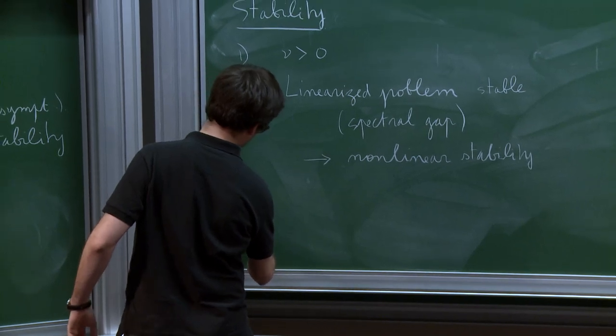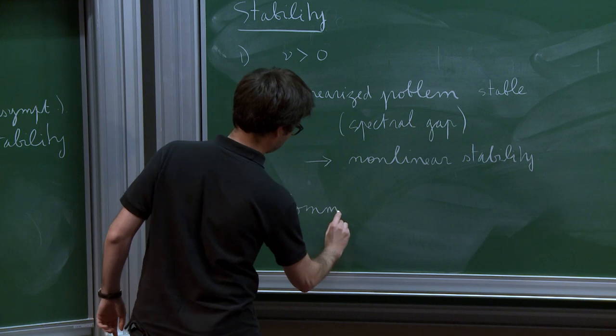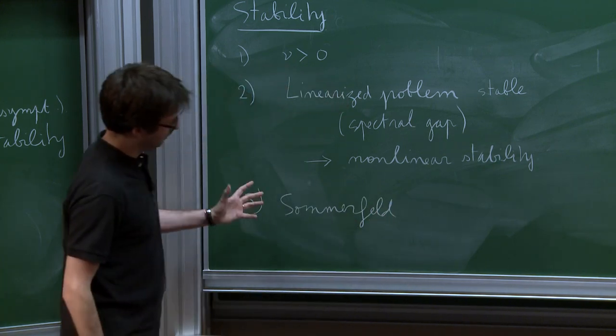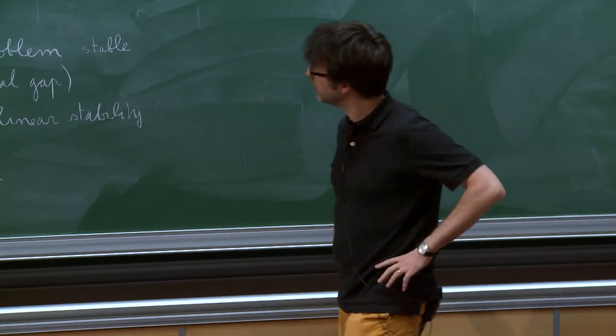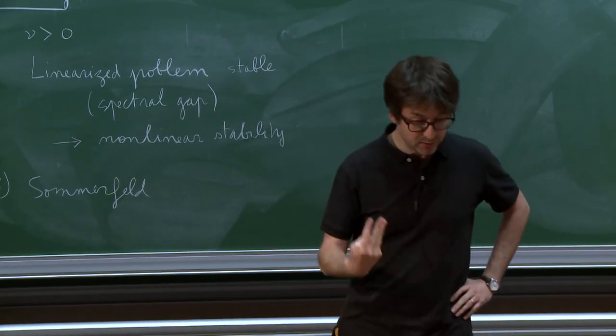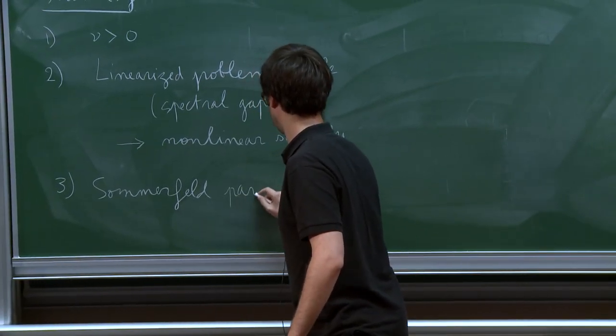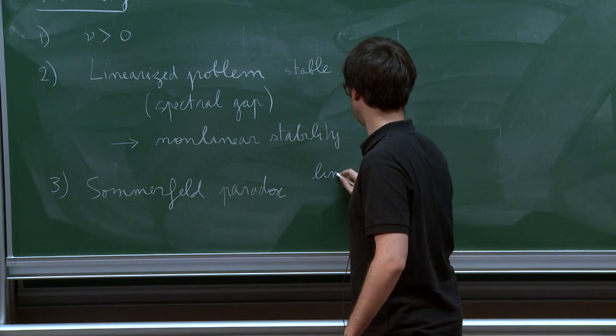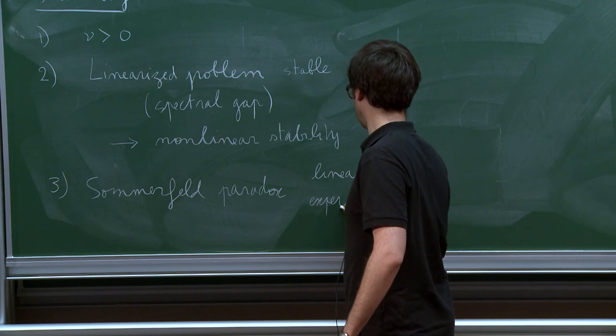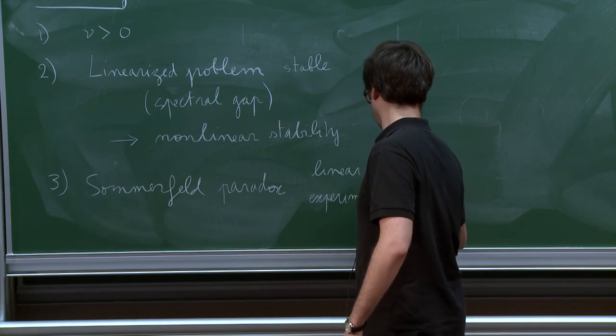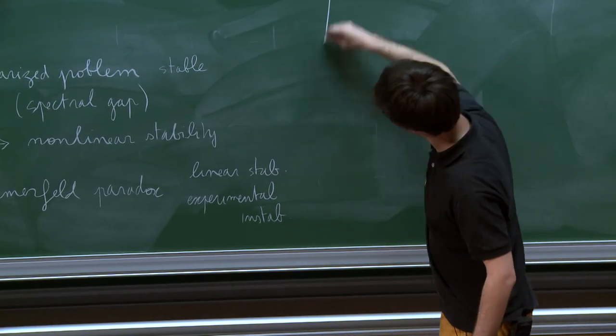Okay. However, there is something which in hydrodynamic stability is known as the Sommerfeld paradox. So it's true for the Couette flow and for many other shear flows. So what happens is that the flow is linearly stable, as we saw, but experimentally unstable. Okay. So it's called the Sommerfeld paradox. So linear stability, but experimental instability. You say even more linear stability? Yes, yes.